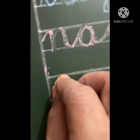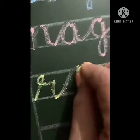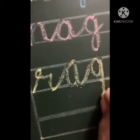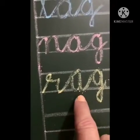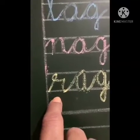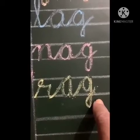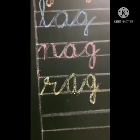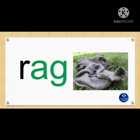Now write down R, A, G. These are again CVC words — in between is the vowel 'A', at the first place is consonant 'R', and at the last place is consonant 'G'. RAG. A piece of cloth is called a RAG.